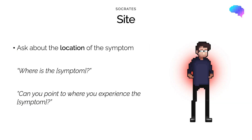The first part of SOCRATES is Site, and this involves asking the patient about the location of the symptom. Remember, SOCRATES can be used for many symptoms and not just during a pain history. For example, if a patient presents with limb weakness and abnormal sensation, we would want to establish the site of these symptoms. However, asking about location is not required for systemic symptoms such as breathlessness, fever, and weight loss.